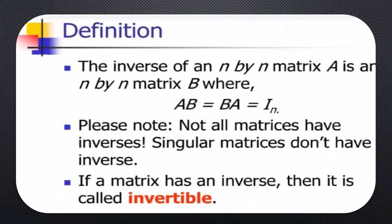What is the inverse of a matrix? The inverse of an n by n matrix A is also an n by n matrix B, where AB equals BA equals In, and In is the identity matrix of order n. Please note that not all matrices have inverses — singular matrices do not have inverses. Matrices whose determinant is equal to 0 are singular. If a matrix has an inverse, then it is called invertible.